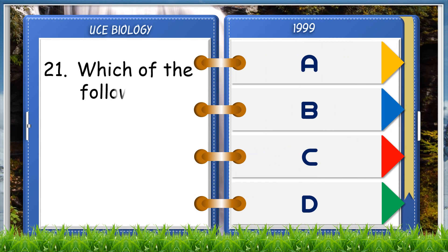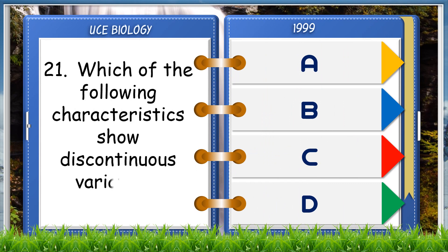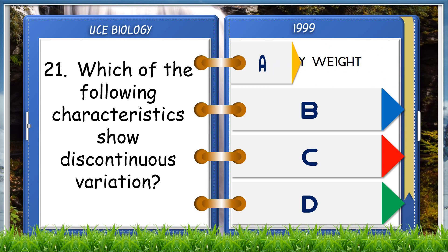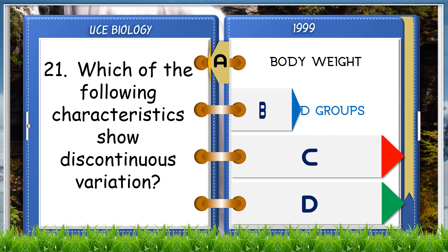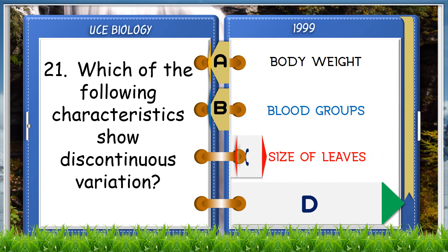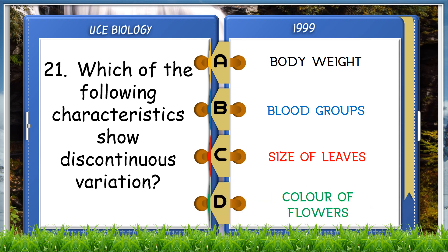Which of the following characteristics show discontinuous variation? A. Body weight, B. Blood groups, C. Size of leaves, D. Color of flowers. The answer is B, blood groups.